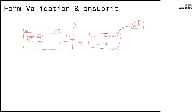But for a formatting error like expecting a number but the user typed something else, we don't need to depend on the server. We can use JavaScript to test that locally at the client machine, inside the browser itself. This is a valid candidate for validation inside the browser.